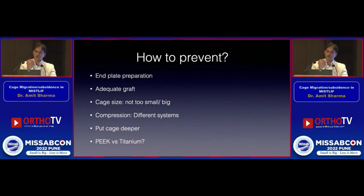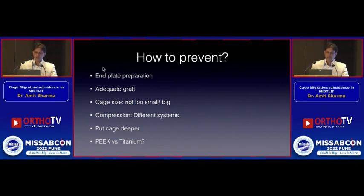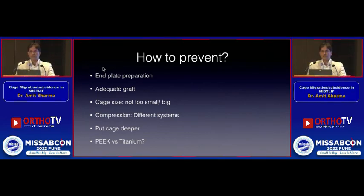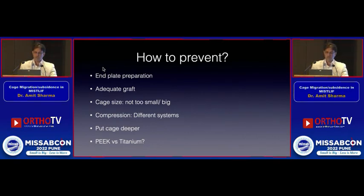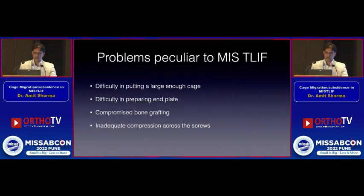Dolphin-nose cages that can be inserted deep are advantageous. Choose an MIS TLIF system that allows adequate compression across the endplate to reduce cage back-out risk. Regarding PEEK versus titanium: literature suggests PEEK cages back out more due to lack of integration, but smooth surface — whether PEEK or titanium — may not make much difference unless you're using a mesh titanium cage.